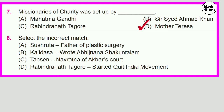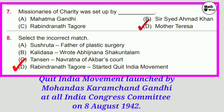Question No. 8: Select the incorrect match. Option D is the incorrect match — Quit India Movement was launched by Mohandas Karamchand Gandhi at the All India Congress Committee on 8th August 1942.